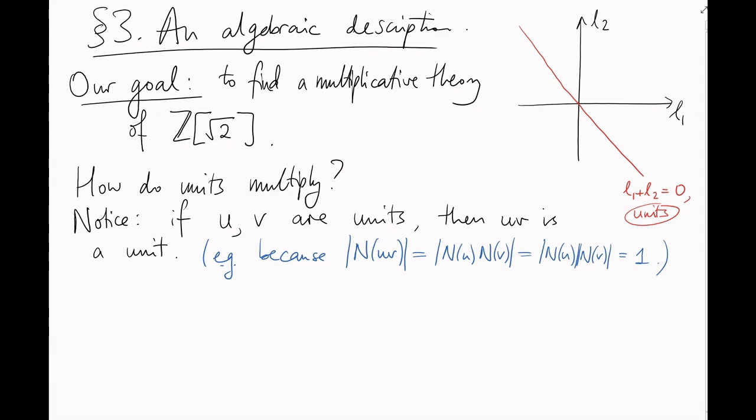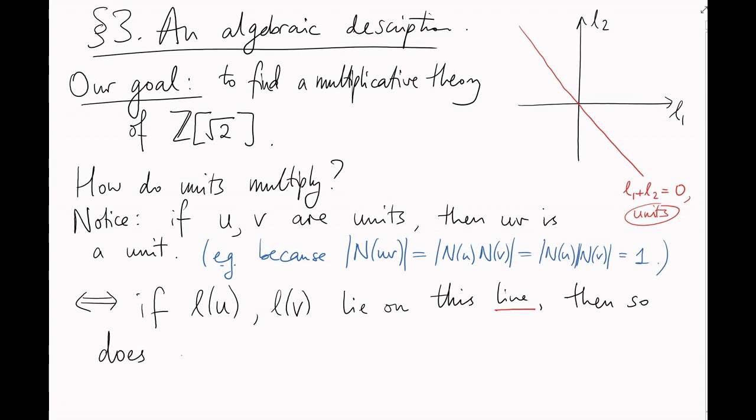What does that mean in logarithm space? Well, it means that if L of u lies on this line, and L of v lies on this line, then L of uv lies on this line. But L is a logarithm. So L of uv is just L of u plus L of v.